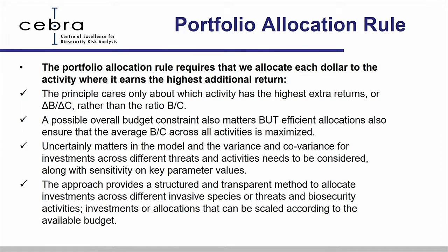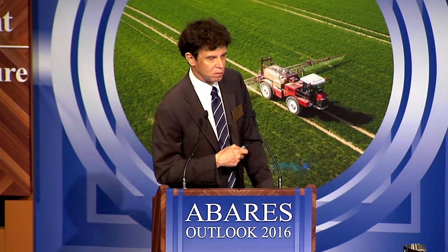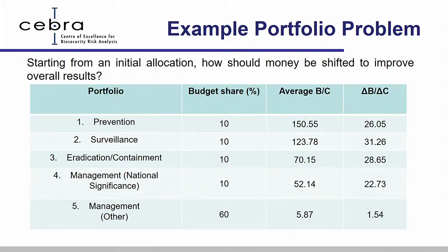One possible glitch is that the size of the budget matters — I'll show that as my third point later. Here's an example with imaginary numbers. You're looking across different biosecurity activities: prevention, surveillance, eradication, management of existing things, and other types of management — the biosecurity measures you care about at the moment.